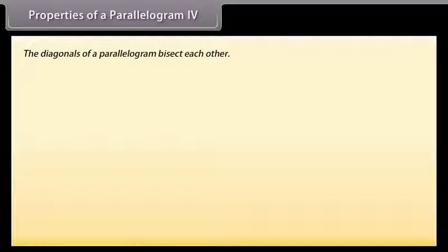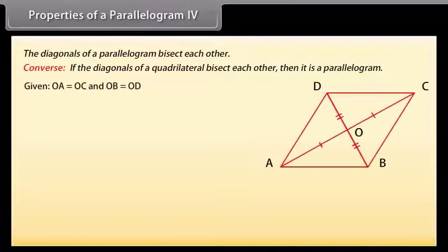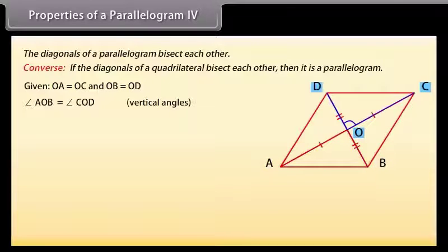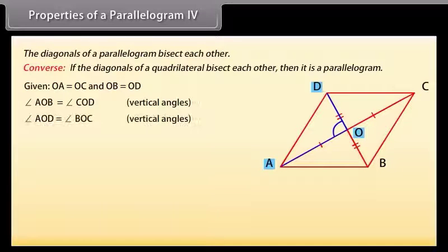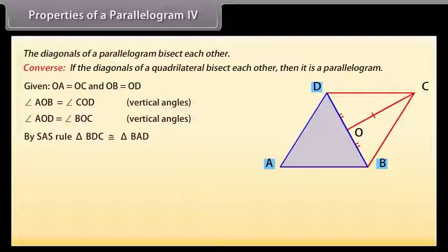Properties of a parallelogram 4: The converse of this theorem says: if the diagonals of a quadrilateral bisect each other, then it is a parallelogram. Let us prove it. Given that OA = OC and OB = OD. Angle AOB = angle COD because these are vertical angles. Similarly angle AOD = angle BOC. So by SAS rule, triangle AOB is congruent to triangle COD.